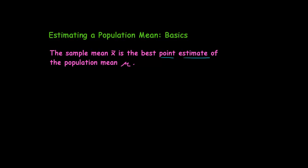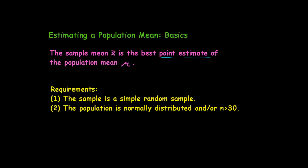The procedure we'll use has certain requirements. Let's look at those. We must have a simple random sample. And we either are starting with a normally distributed population, or we have a sample size greater than 30, or we could have both.